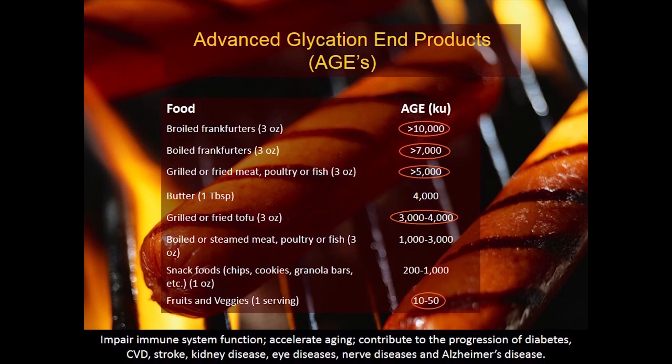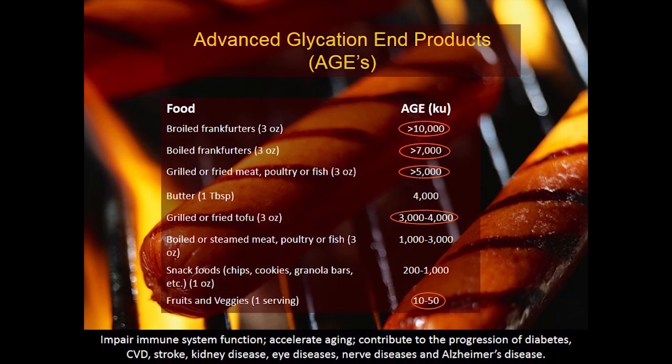Advanced glycation end products (AGEs) literally impair immune function, accelerate aging, and contribute to the progression of all chronic degenerative diseases and organ damage. The most concentrated sources are cooked processed meats — broiled frankfurters top the list, then boiled frankfurters, then grilled or fried meat. Even fried tofu and snack foods like chips and cookies contain them, while fruits and vegetables are very low in these compounds.